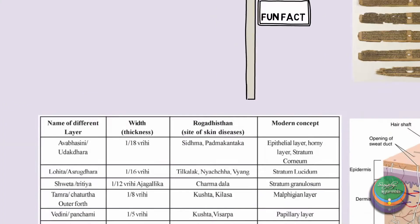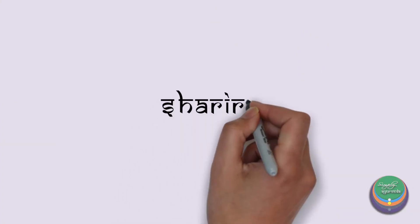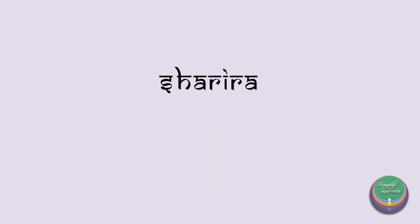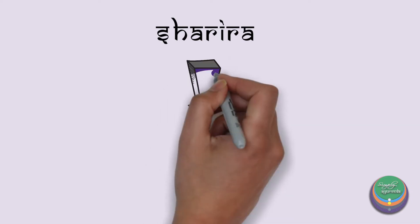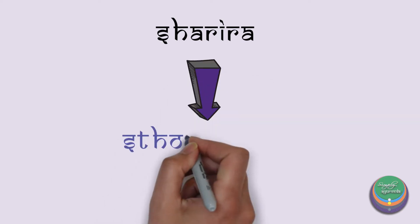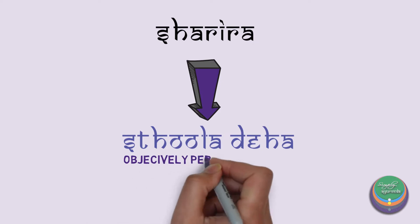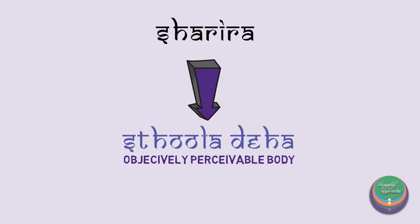Starting with the first aspect of our study in today's video — Sharira. Simply put, Sharira is nothing but the Sthoola Deha, that is, the objectively perceivable body.